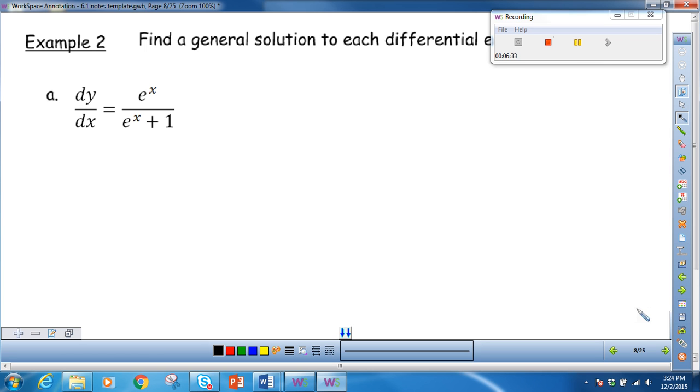Now I'm asked to find a general solution. In finding a general solution, I still have to solve for y, but in the end, I will have c in my equation. On this side of the equation, everything is in terms of x. So all I have to do here is to bring the dx to the other side. So I get e to the x over e to the x plus 1 dx.